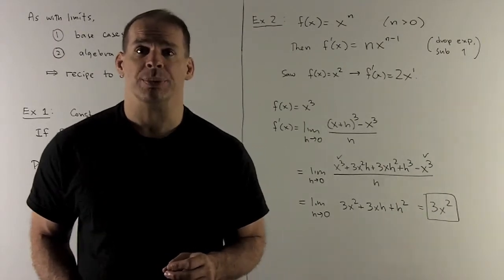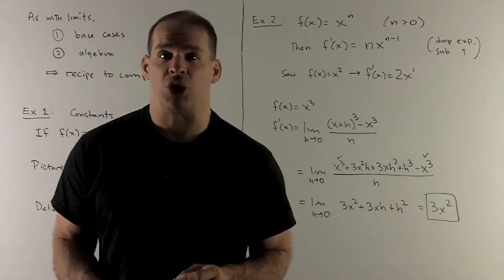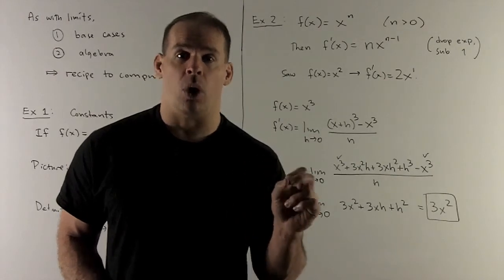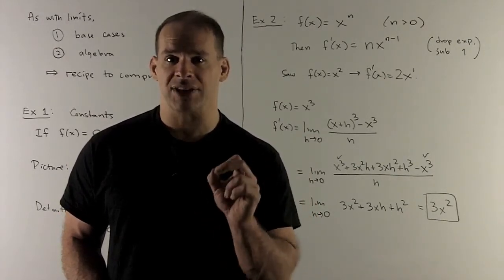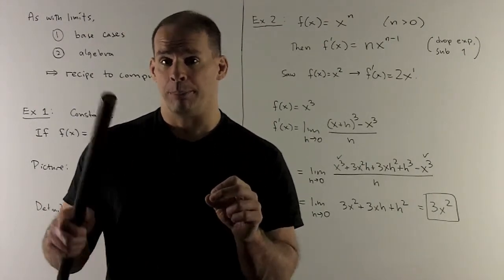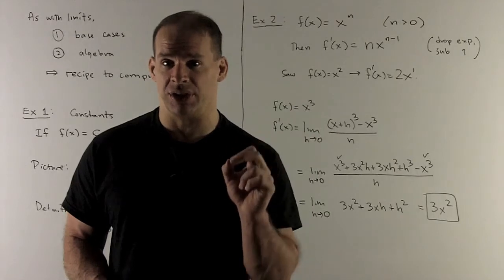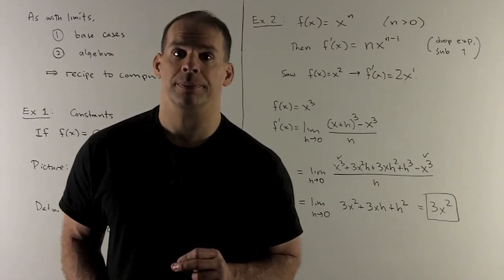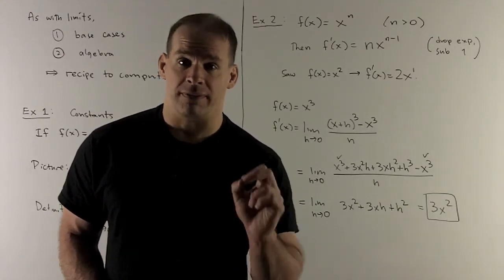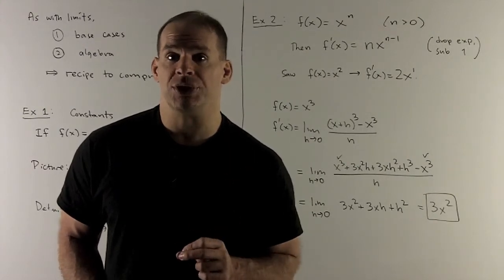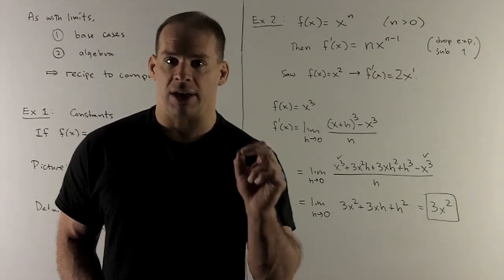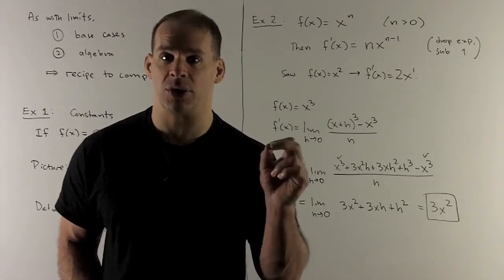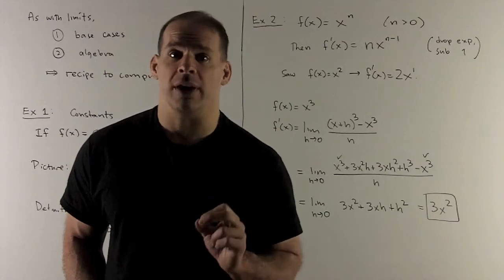Let's take a look at some special cases. If I have the function x, that's a straight line with slope equal to one, so the derivative of x is equal to one. Using the formula: x is equal to x to the one, so the rule says bring the one down, giving x to the one minus one, which is x to the zero. Anything to the zero power is equal to one, so the derivative is equal to one. We've already seen that for f of x equal to x squared, the derivative is going to be equal to 2x. Using our formula: bring the two down, then multiply by x to the two minus one, which is x to the one, which is just x. So I get 2x — that agrees with our formula.